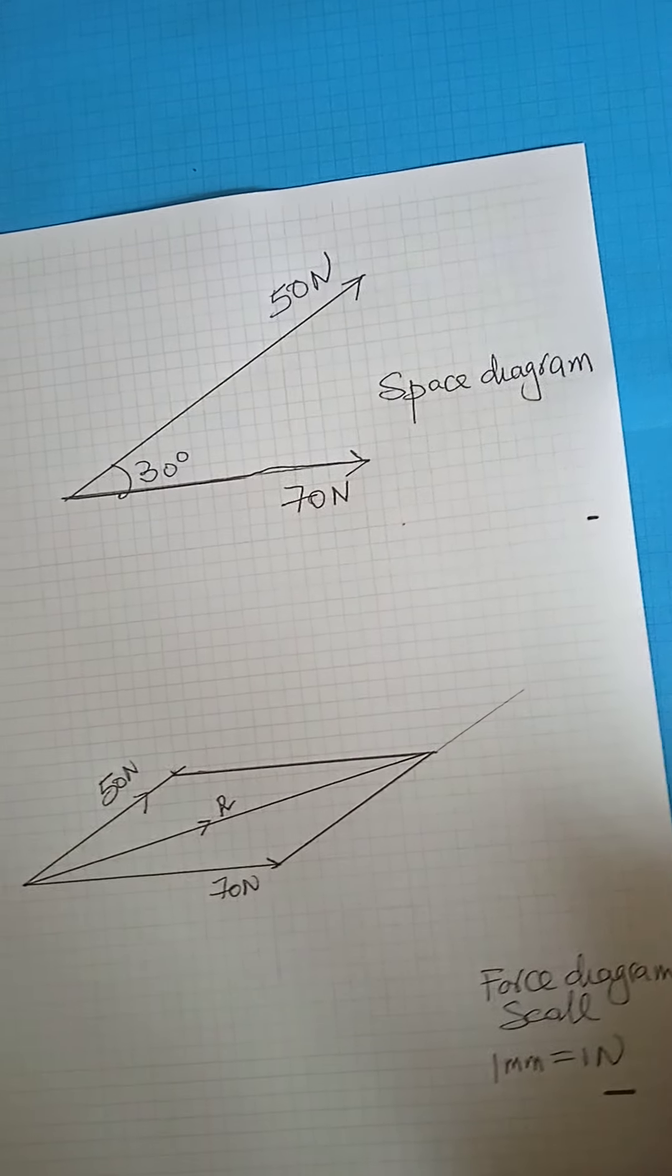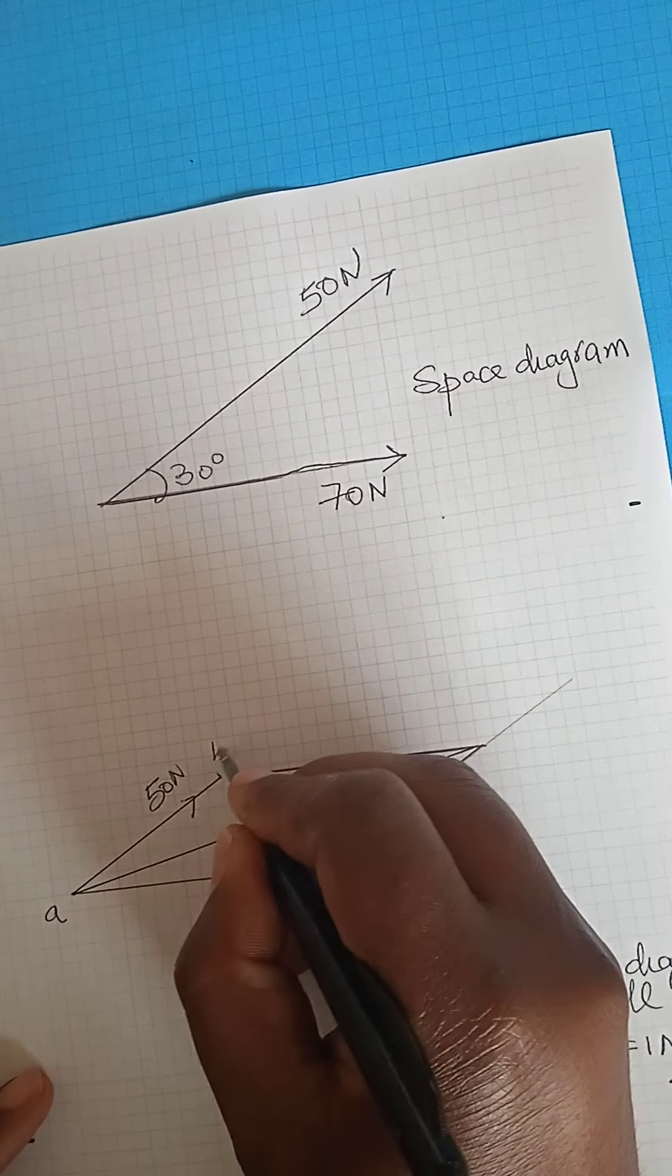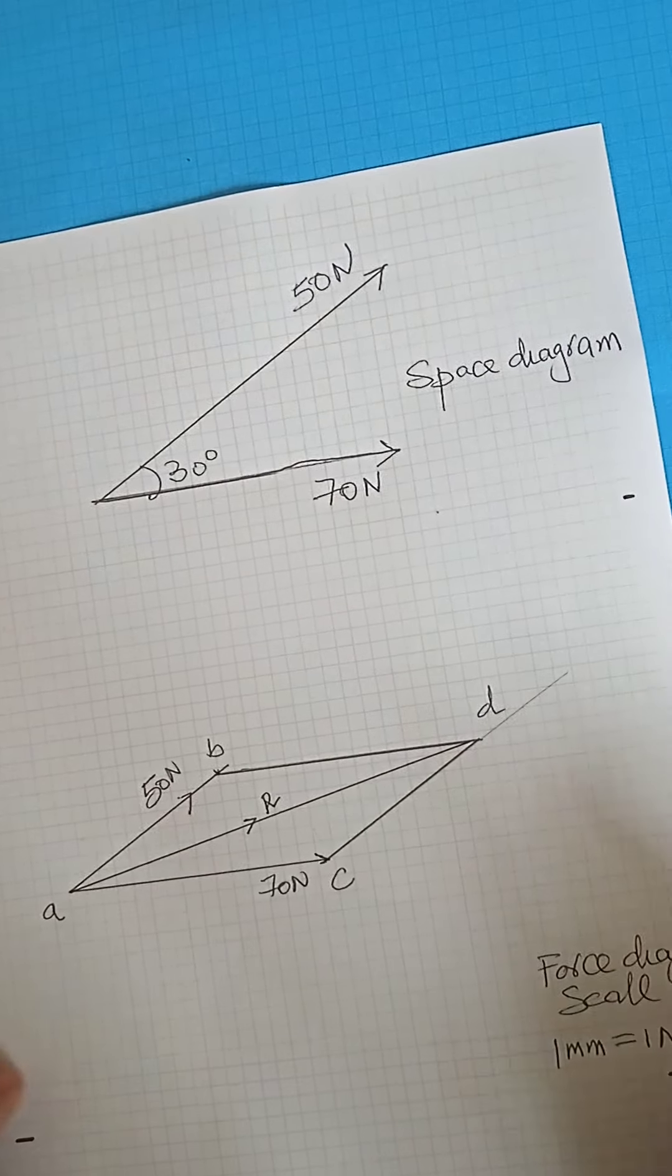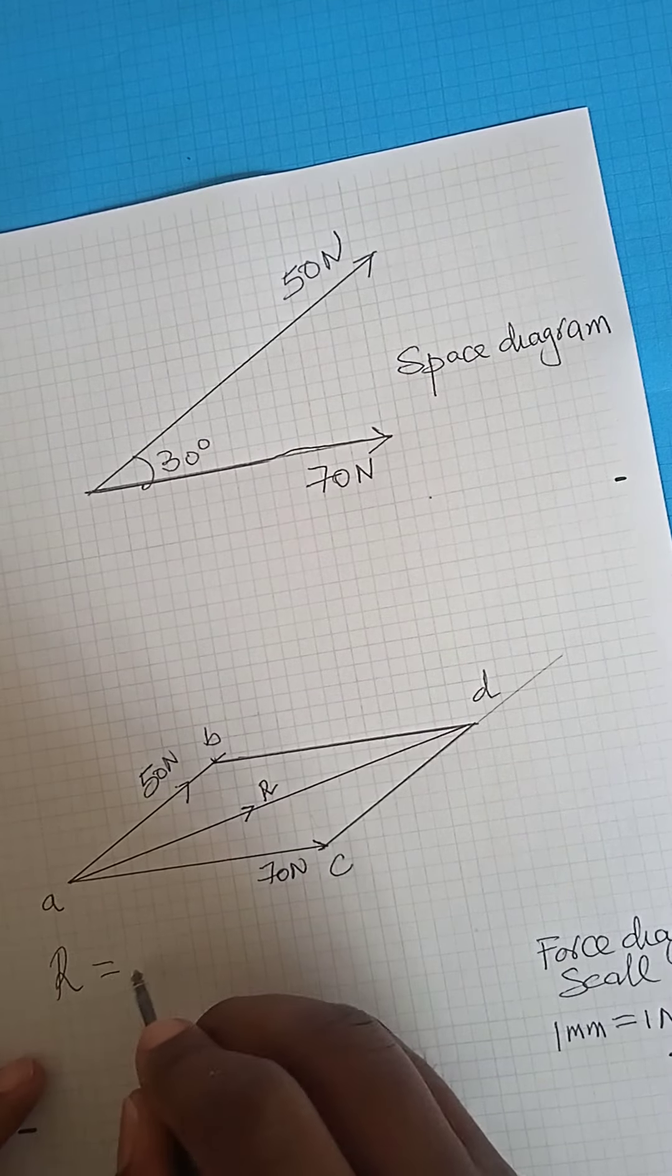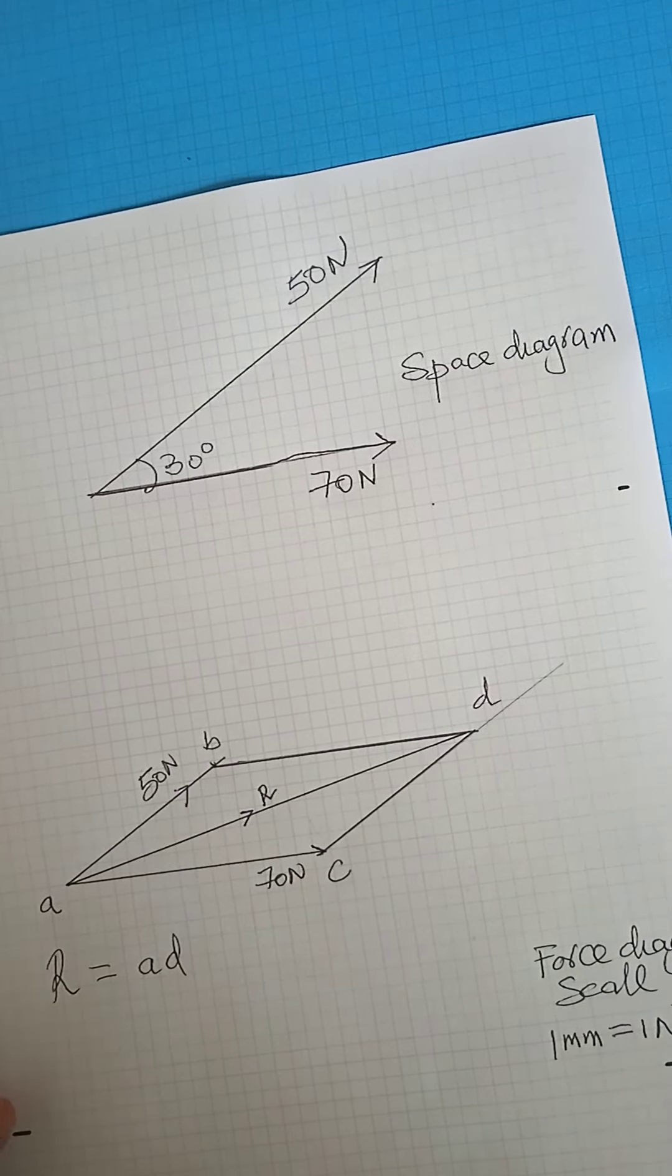So I can simply label the parallelogram say A, B, C, and D. So your resultant force R is equal to AD. So you measure the distance of AD.